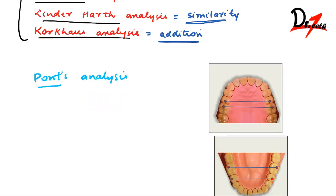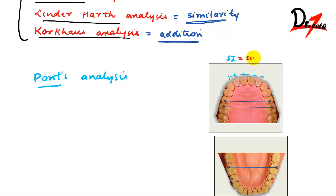What Pons did was measure the four maxillary incisors to establish the width of the arch. He measured from one incisor to the next — central to central, and lateral to lateral — added all four measurements, and got SI, which is the sum of incisors. He then measured from one premolar to the other premolar.